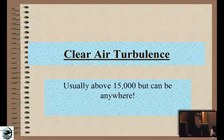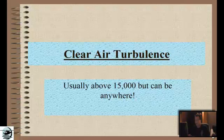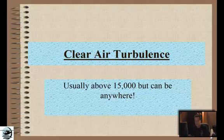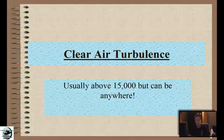Clear air turbulence — they say usually about 15,000 feet but it can be anywhere. Going back to my private pilot manual I reviewed before filming tonight, it's usually above 15,000 but can be anywhere. This can come from different layers of air moving at different directions and speeds, basically mixing with each other — that's how you can get clear air turbulence.